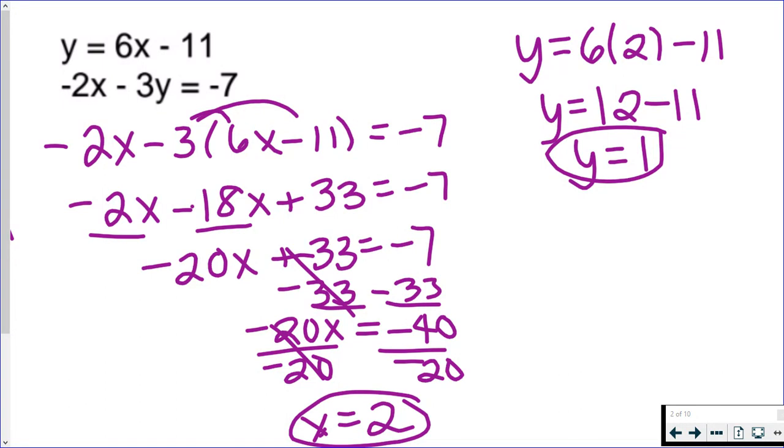Or the solution to a system is where those functions intersect on a graph. So that means if you were to put both of these lines on a graph, they would cross each other with an x value of 2 and a y value of 1, or also known as the point 2 comma 1. So you could also have your answer as an ordered pair here.